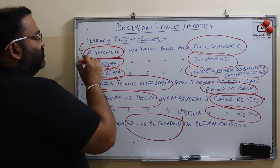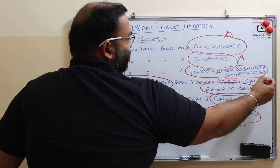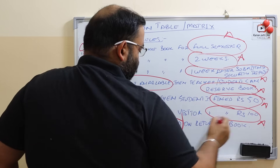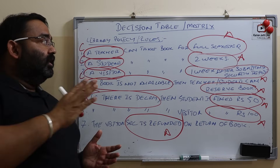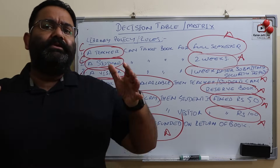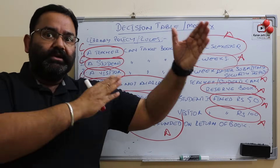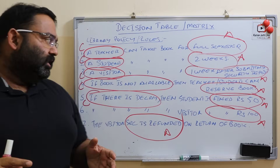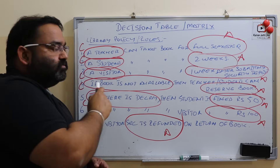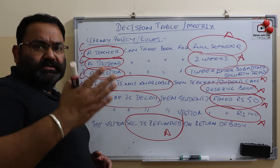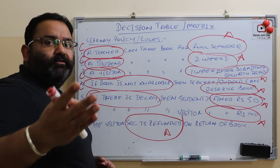So these are the conditions, and these are the actions. Before you make a decision table, take the business rules — there will always be some business rules — and from those rules identify what are the conditions and what are the actions. All the conditions go into the conditions section, all the actions go into the actions section, and then we put the corresponding condition and action entries.